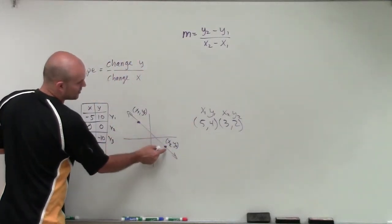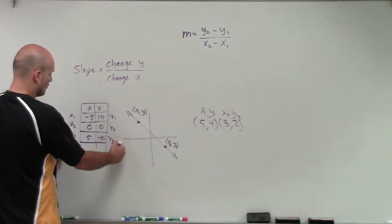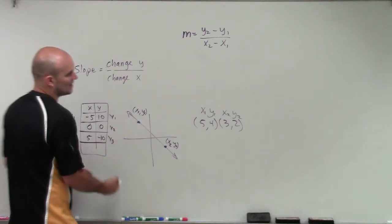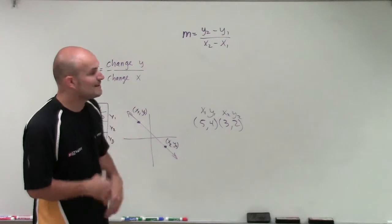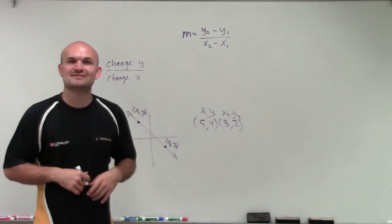Subtracting this point from this point, or this point from this point. Here to here, or here to here. It doesn't matter which way, you just need to make sure you're consistent. So there, ladies and gentlemen, that's your slope formula. Now I'll get into some examples. Thanks.